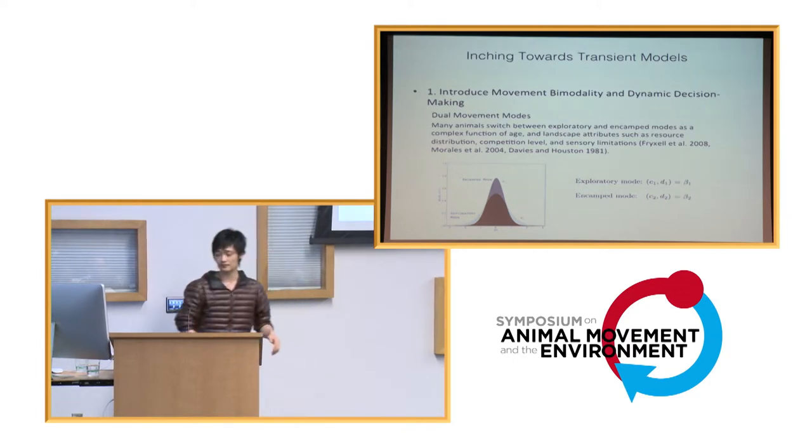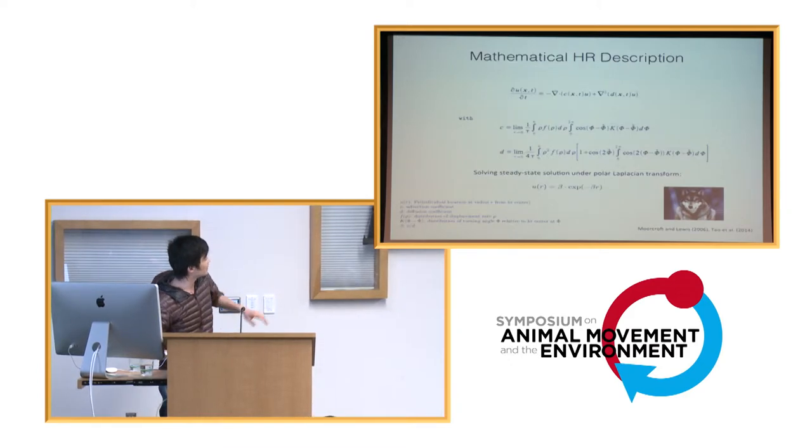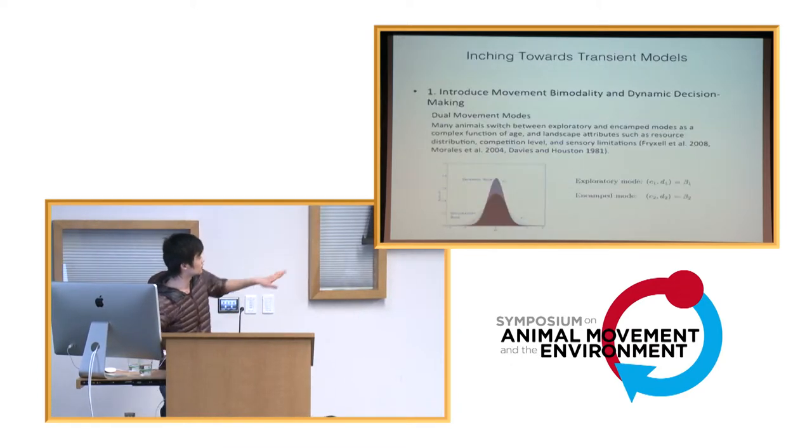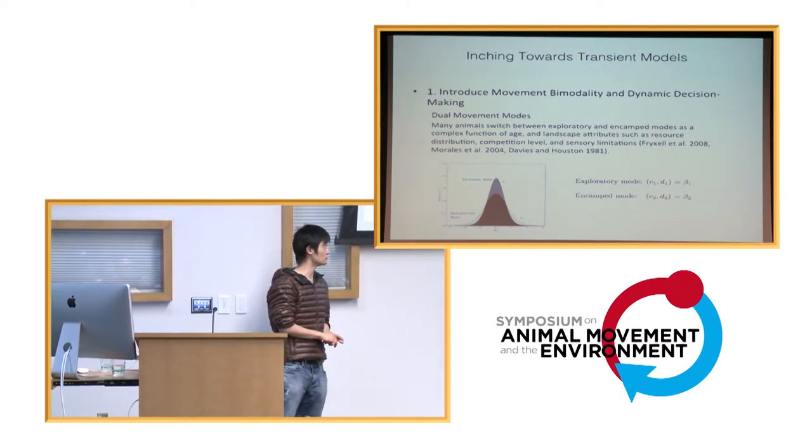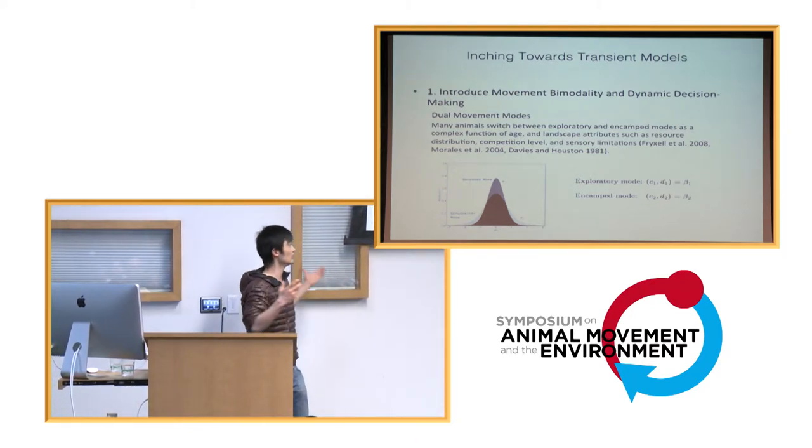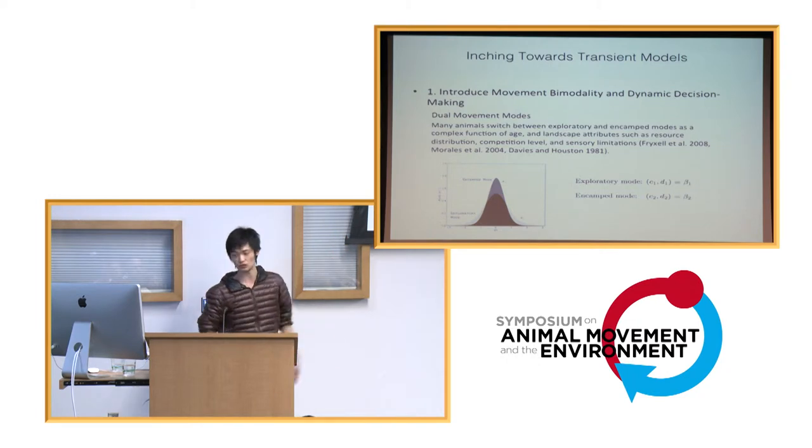And in relation to the previous models we have shown here, we can basically summarize the two different modes by two different sets of advection and diffusion coefficients. So basically, you can say they both have a very distinct beta coefficient that is just a cumulative composite of those two parameters.